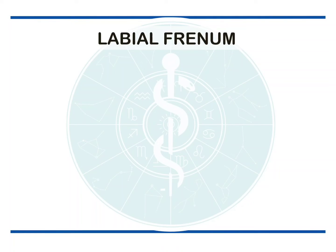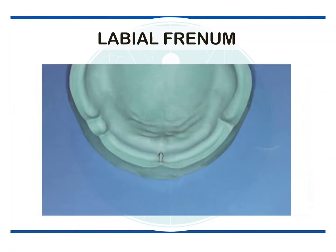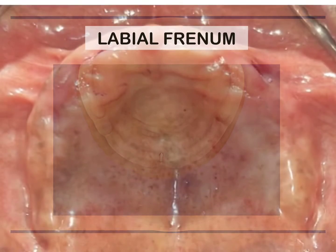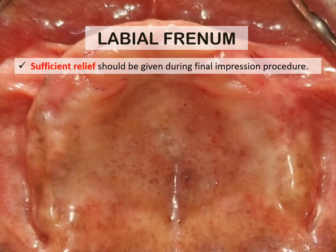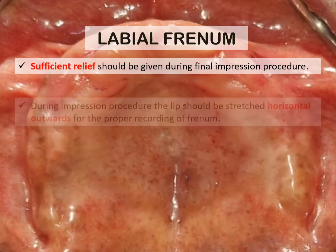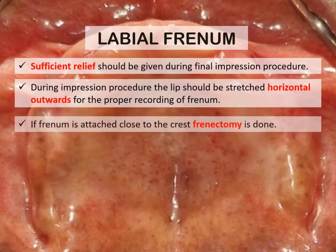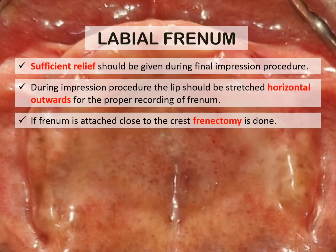The labial frenum appears as a fold of mucous membrane extending from the mucous lining of the lip to the crest of the residual ridge on the labial surface. It may be narrow or broad but contains no muscle fibers of significance. Sufficient relief should be given in the final impression procedure. During the impression procedure, the lip should be stretched horizontally outwards for proper recording of the frenum. If the frenum is attached close to the crest, frenectomy is done.